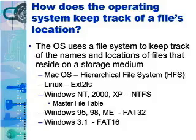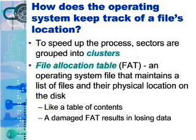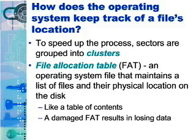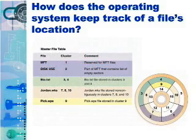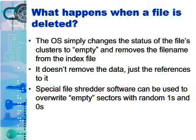To speed up the process of storing and retrieving data, a disk drive usually works with a group of sectors called a cluster, or a block. The number of sectors that form a cluster varies depending on the capacity of the disk and the way the operating system works with the files. If your computer uses the FAT32 file system, this index file is called the File Allocation Table, or FAT. If your computer uses NTFS, it's called the Master File Table, or MFT. To delete a file from a disk so that no one can ever read it, you can use special file shredder software that overwrites empty sectors with random ones and zeros.